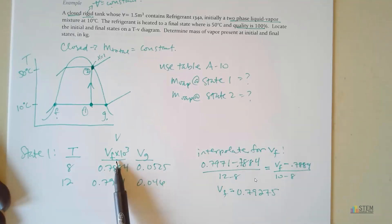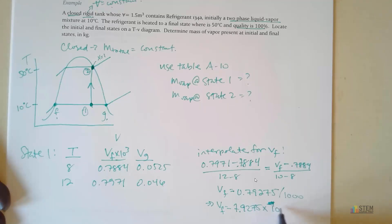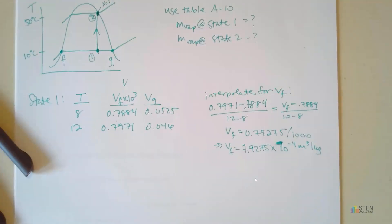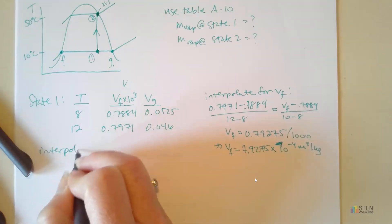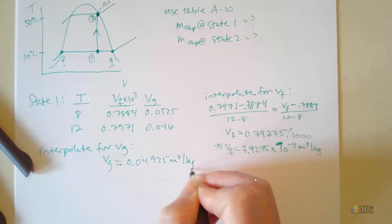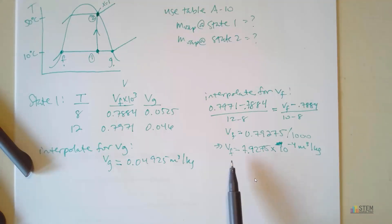And you'll get that VF is 0.79275. Now remember, this is VF times 10 to the third. So in order to get the true value, we need to divide this by 1,000. So this will give you 7.9275 times 10 to the negative fourth, and that's cubic meter per kilogram. Now we're going to do the same thing for VG. And if you do that same thing, you get 0.04925 cubic meters per kilogram. So these will be the saturation points at 10 degrees Celsius, and we're going to need that in order to get the information we want.